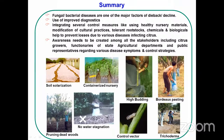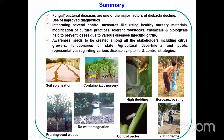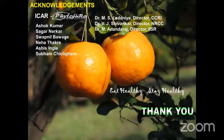Awareness needs to be created among all stakeholders — including citrus growers, state agriculture department functionaries, and public representatives — regarding various disease symptoms and control strategies. Integrating several control measures is the key to managing the various diseases infecting citrus. Acknowledgement to co-workers who helped in different phases of this work.